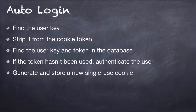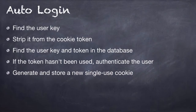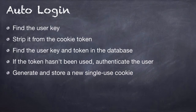Let's recap: find the user key first, then strip it from the cookie token, find the user key and token in the database, and if the token hasn't been used, authenticate the user. After that, generate and store a new single-use cookie at the same time as authenticating the user.